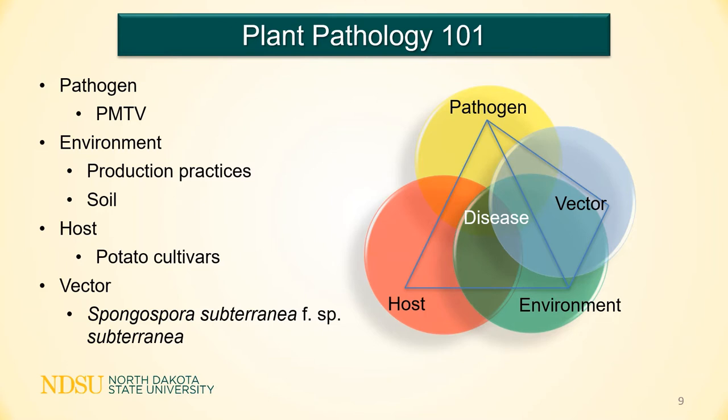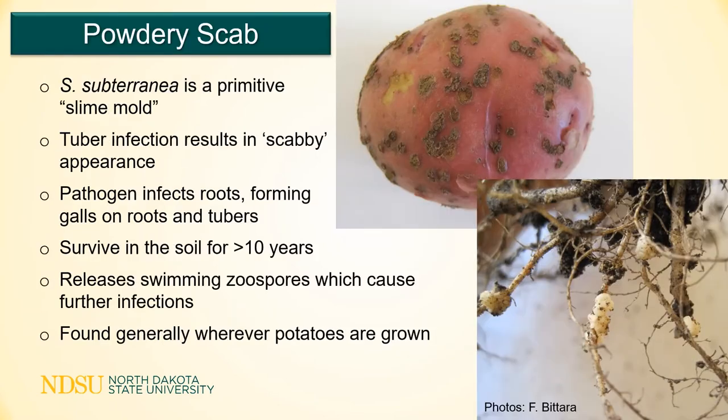Spongospora is important in its own right because it is the causal agent of powdery scab. Powdery scab gets its name from those scabby, erumpent lesions you see on the tuber in the top photo. The pathogen also infects roots, forming the galls you see in the lower photo. This pathogen can survive as resting spores in the soil for more than 10 years. These release swimming zoospores which cause further infections, and this pathogen is found generally wherever potatoes are grown.